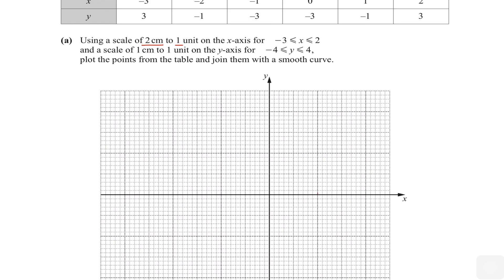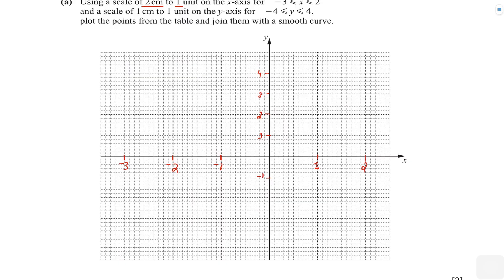So two centimeters to one unit means on the x-axis we'll have one, two, and in the opposite direction minus one, minus two, and minus three. On the y-axis we'll have one, two, three, four, and below the x-axis minus one, minus two, minus three, and minus four.